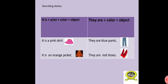Describing clothes. What's the meaning of describing? Wasf. It's plus A or N plus the color plus the object. For example, number one, it is a pink skirt. We studied it before. It's a pink skirt, not a skirt pink. Number two, it's an orange jacket. Why did I say N? Because O is a vowel. It's an orange jacket.